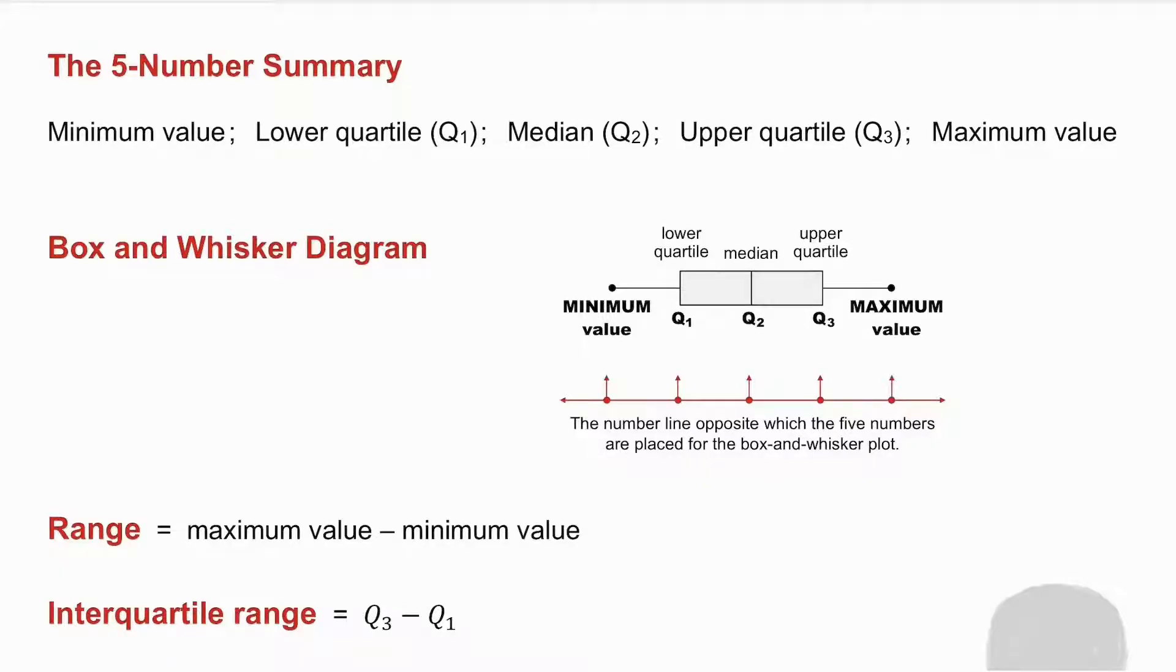From the five number summary we can draw a box and whisker diagram. The box and whisker diagram has to be placed on a number line and you literally plot those five values. What you then do is you draw a box around the lower quartile and the upper quartile and the median is drawn as a line somewhere in the box. You have a line that goes to the minimum value and a line that goes to the maximum value.